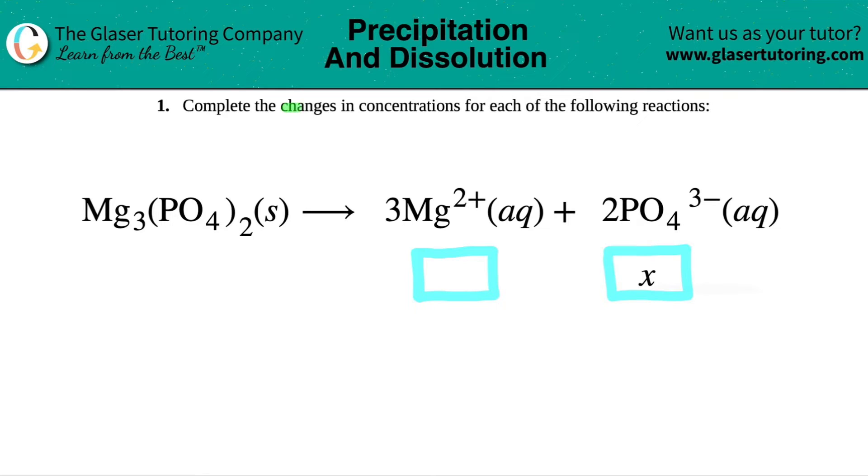Number one, complete the changes in concentrations for each of the following reactions. We have magnesium phosphate, which is Mg₃(PO₄)₂ solid. This will dissociate or yield into its ions: three Mg²⁺ aqueous plus two PO₄³⁻, so two phosphates and three magnesiums.